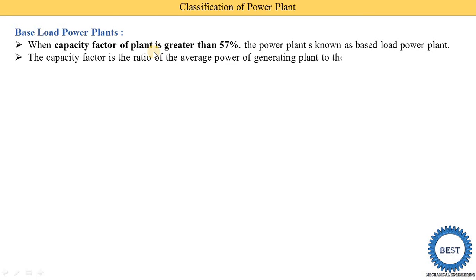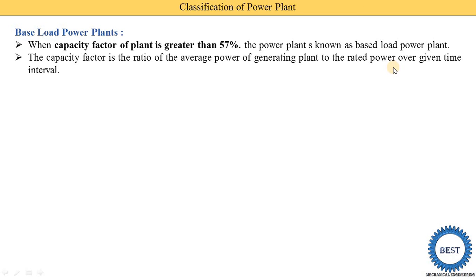The capacity factor is the ratio of the average power generated by the plant to the rated power over a given time interval. For example, if a power plant has a rated capacity of 100 megawatts and is producing 57 megawatts, then 57 divided by 100 gives 57%, which means it is a base load power plant.